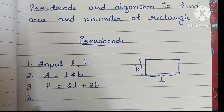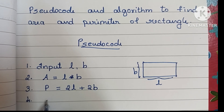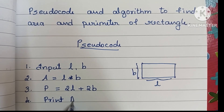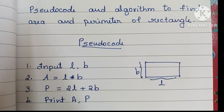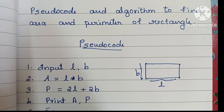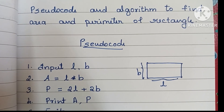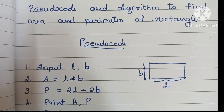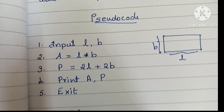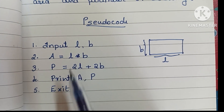Next we have to print the area and perimeter of the rectangle: print A, P. The fifth step is exit, which is optional — you can write it or leave it. So this is the pseudocode to find the area and perimeter of a rectangle.